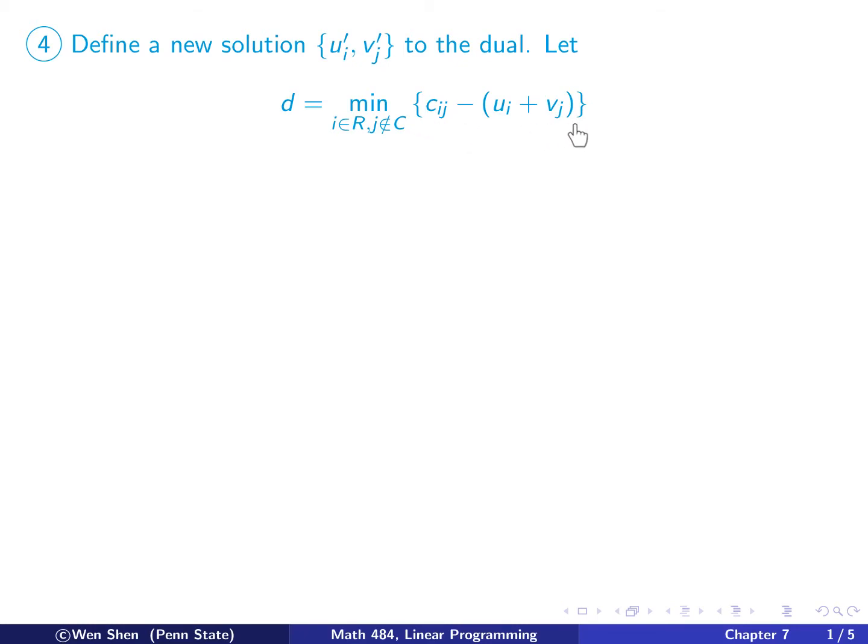We know this quantity is non-negative. And then we'll take the minimum of this for the index i in the set R and for j not in C. So be careful, this is i in R and j is not in C.